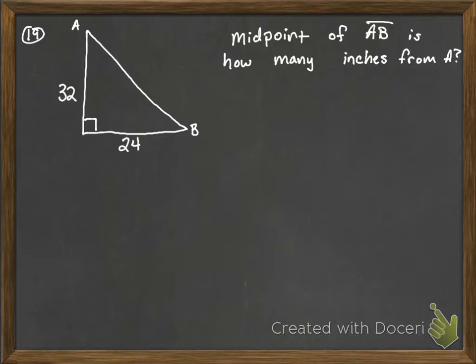Number 19 deals with a right triangle, and the question says that the midpoint of AB is how many inches away from A. So the midpoint of AB is going to be somewhere kind of in the middle.